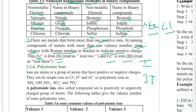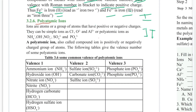Polyatomic ions are atoms or groups of atoms that have positive or negative charges. These ions, which are defined by the atoms, are groups of atoms that carry positive or negative charges.